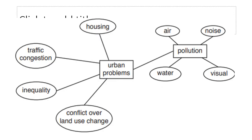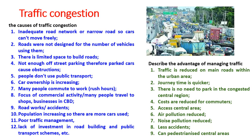In your syllabus, the urban problems specified are housing, traffic congestion, inequality, conflict over land use change, and pollution. Within pollution, we need to look at air, water, noise and visual pollution.